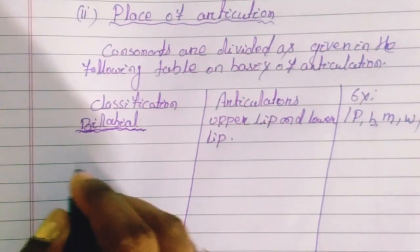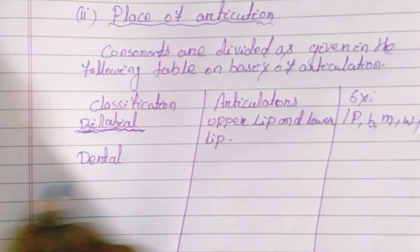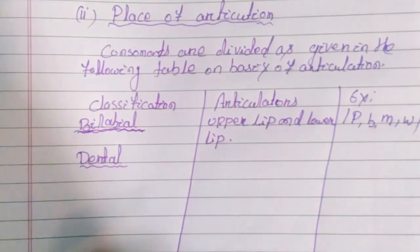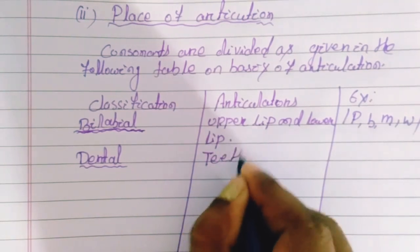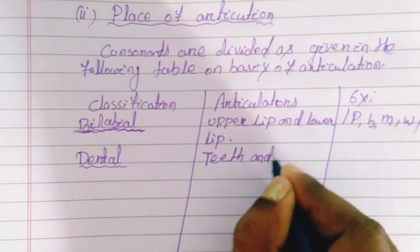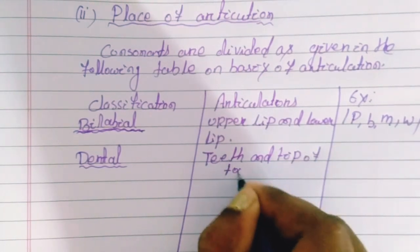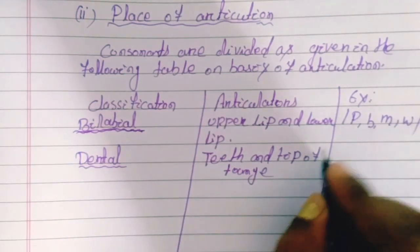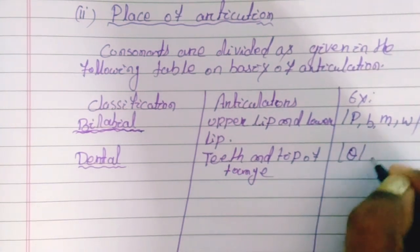The next category is dental sounds. During the production of dental sounds, the articulators are the teeth and tip of tongue. The examples of dental sounds are the /θ/ sound and /ð/ sound.